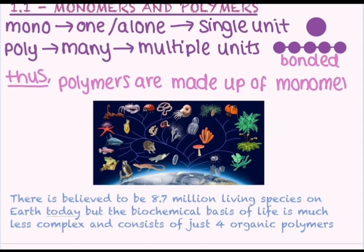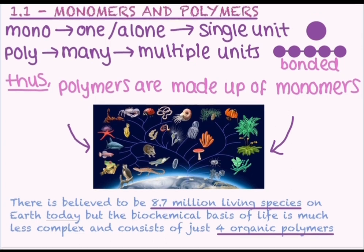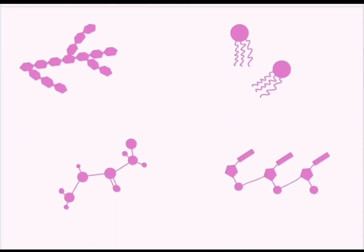Why is this relevant? Well, it is believed that there are around 8.7 million species living on this earth. So the variety of living organisms is beyond measure. Now the fascinating thing about all this is that all of these 8.7 million organisms are predominantly made up of the same four organic polymers. Yep, the chemical basis of life consists of just four things. Now you might already be familiar with some of these structures, but these four molecules here are the polymer units that provide the basis of life for all living organisms.